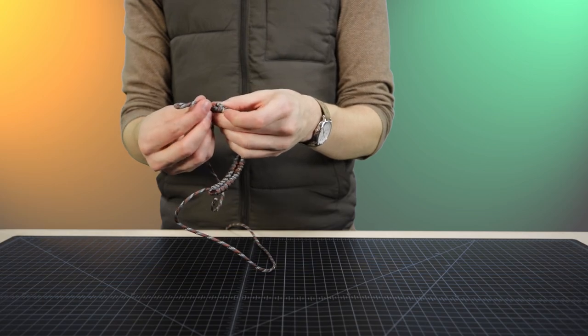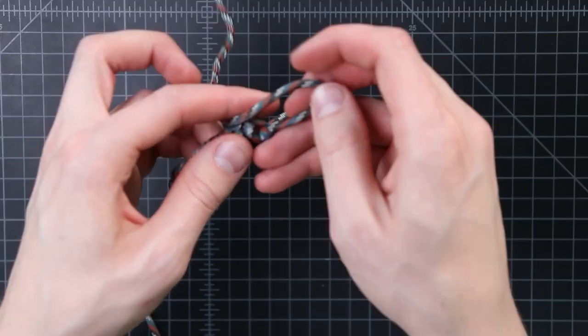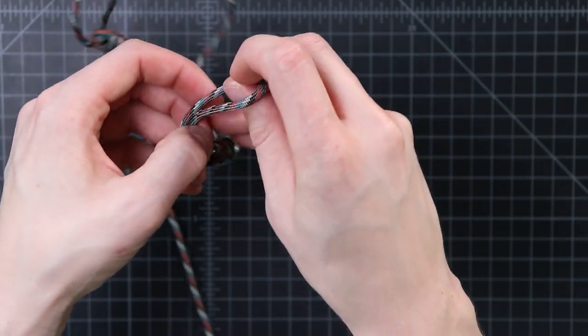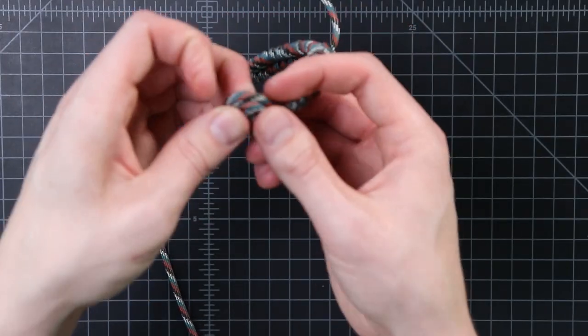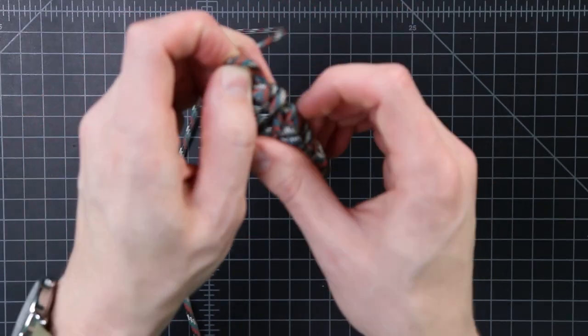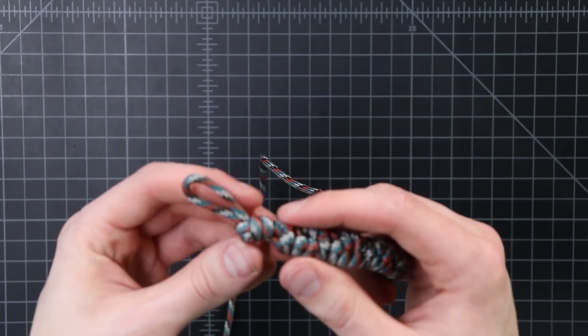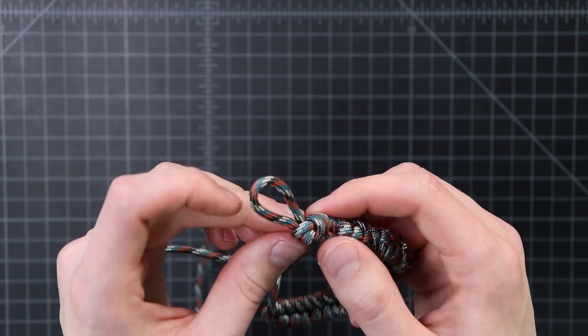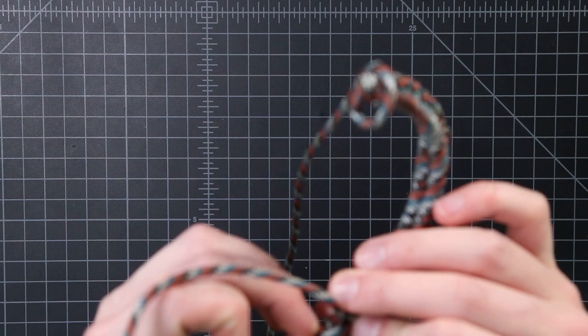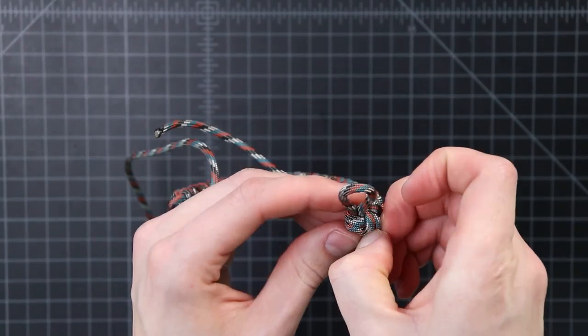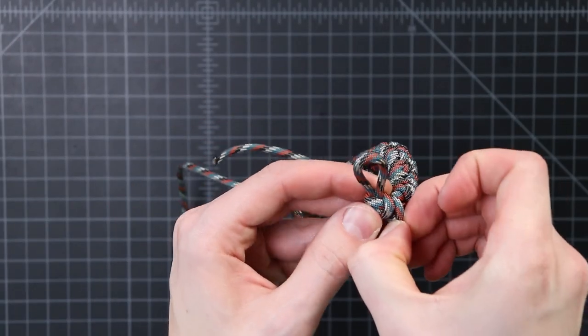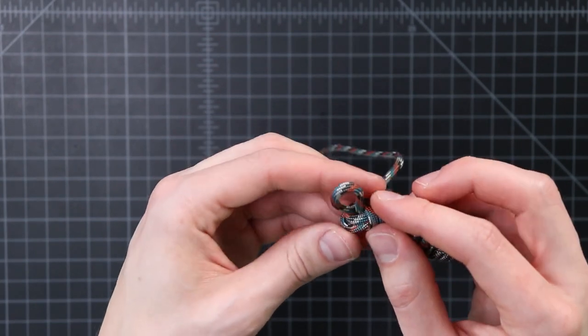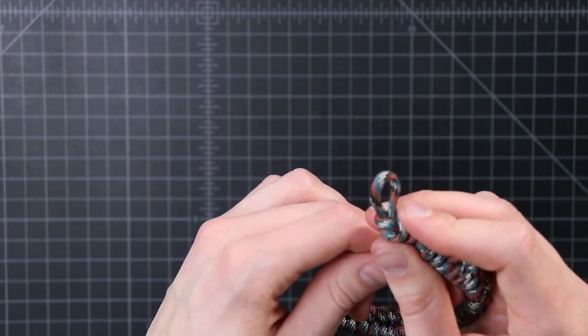So again, we're just going to tie a simple overhand knot. Leave a loop and retie like that. I'm just going to feed that cord through so that my knot is right up against my bracelet weave. The loop is a little bit big at this point, so I'm going to make that a little bit smaller. There we go, fitting around our finger again. And tighten that down.